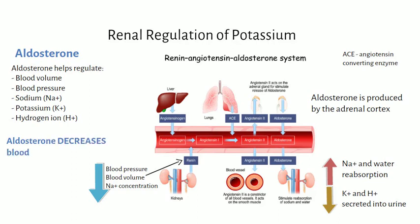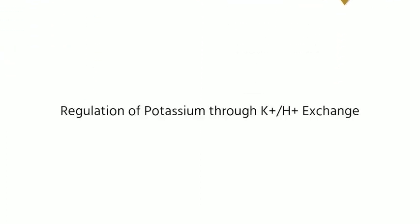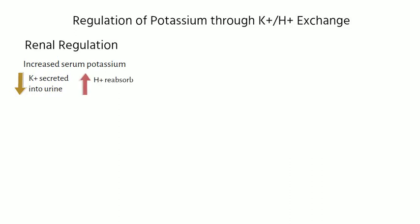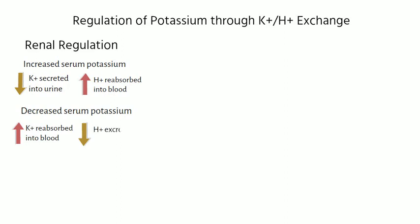Thus, aldosterone decreases blood potassium levels. Potassium is also regulated through potassium-hydrogen exchange systems. There is a potassium-hydrogen exchange mechanism in the cortical collecting tubules of the kidney. When plasma potassium levels are increased, potassium is secreted into the urine and hydrogen ion is reabsorbed into the blood, which can lead to a decrease in pH and metabolic acidosis. Conversely, when potassium levels are low, potassium is reabsorbed into the blood and hydrogen ion is secreted in the urine, which can lead to an increase in pH and metabolic alkalosis.